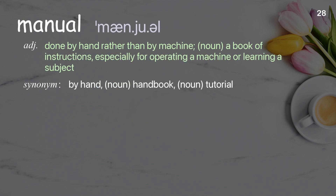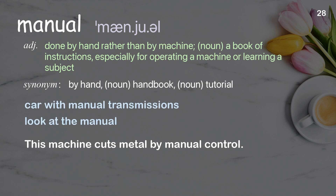Manual: (Adjective) Done by hand rather than by machine. (Noun) A book of instructions, especially for operating a machine or learning a subject. Examples: Car with manual transmission. This machine cuts metal by manual control.